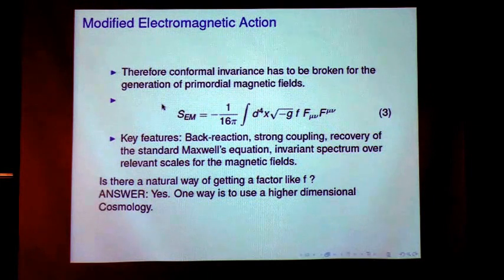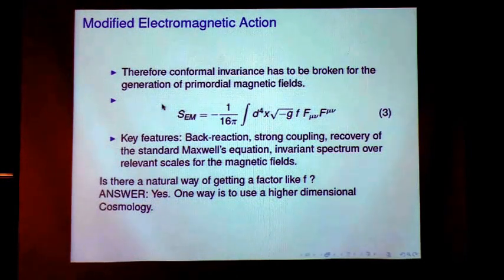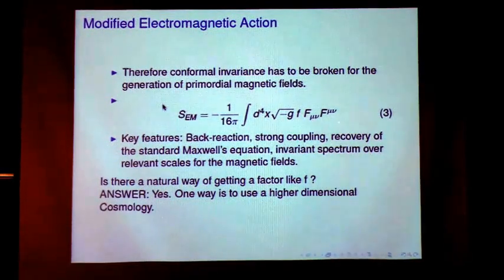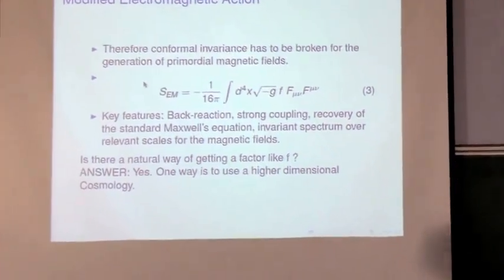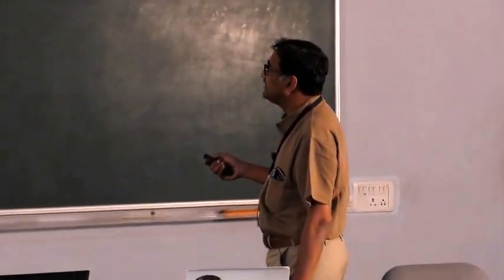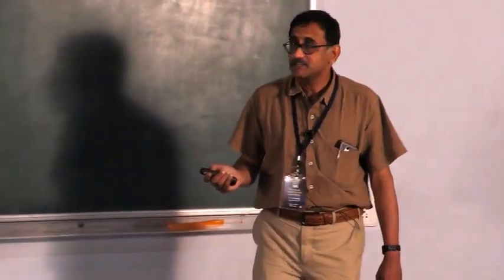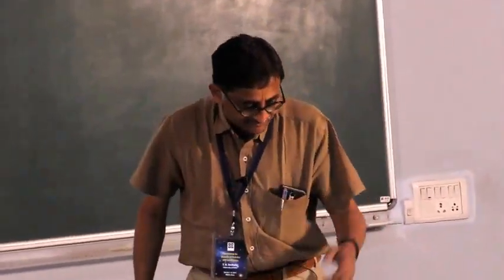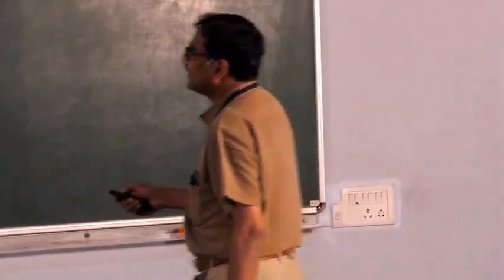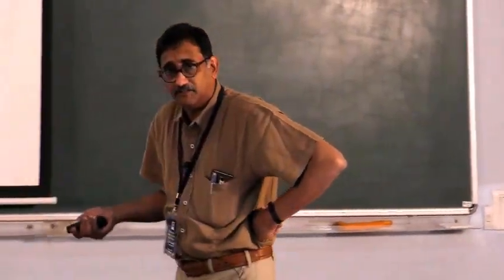Now, there are some problems with this, which I would say in the beginning. One is the back reaction problem. That is, in the process of generating fields, we should not produce too much fields that it back reacts on the cosmology. The other is called the strong coupling problem. With this, there is the interaction with charged particles. So if I have an f into this, we can take this f out, and the effective charge happens to be e by f. And so when f is small, the charge, the effective charge coupling becomes very large, and that is called the strong coupling problem.